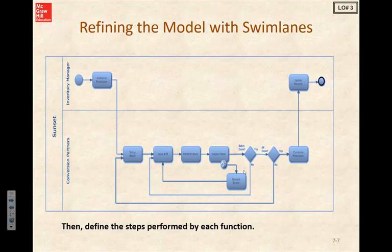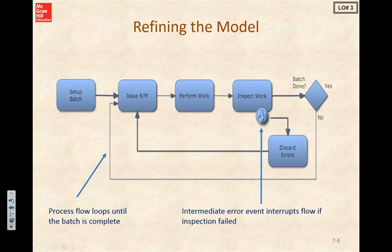Let's take a look at what we added. Our customer pointed out that there is a separate department that will inspect the work and keep our internal controls up. We've got this work inspection and also an intermediate event which interrupts the flow if our inspection fails — because then we're going to discard the errors and go back to our raw materials and start the process over.